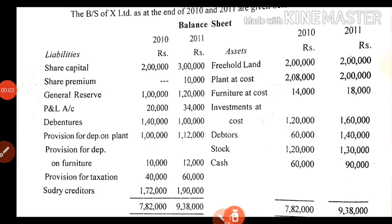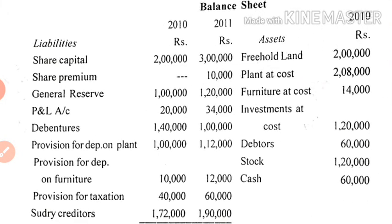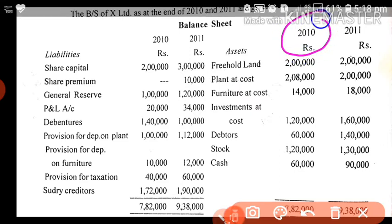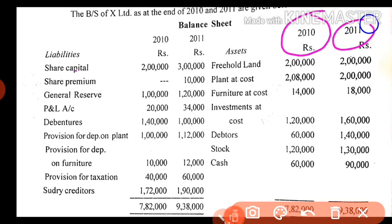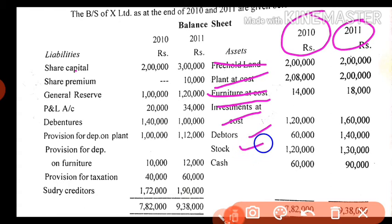Now let us discuss one more problem related to schedule of changes in working capital. The first stage is to identify current assets and current liabilities from the two-year balance sheet for 2010 and 2011. 2010 is taken as the previous year and 2011 as the current year. Freehold land, plant and machinery, furniture at cost, and investment at cost are not current items. Debtors, stock, and closing stock are current items.